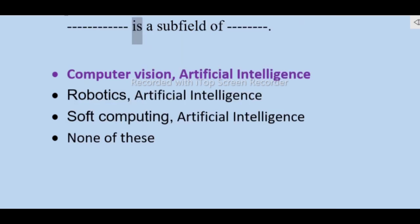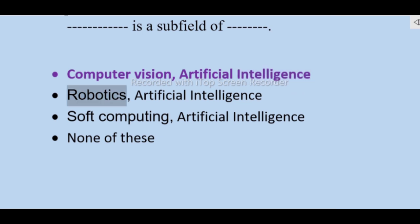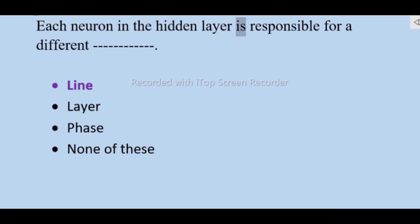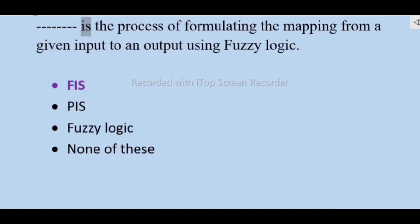Supervised learning is a subfield of artificial intelligence — not computer vision, robotics. Soft computing is a subfield of artificial intelligence — none of these. Each neuron in the hidden layer is responsible for a different line.